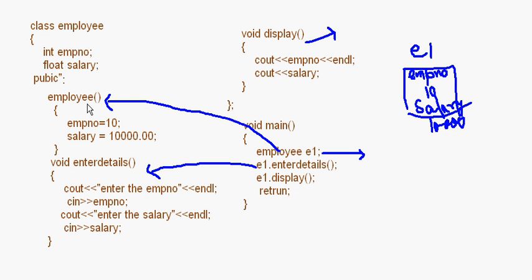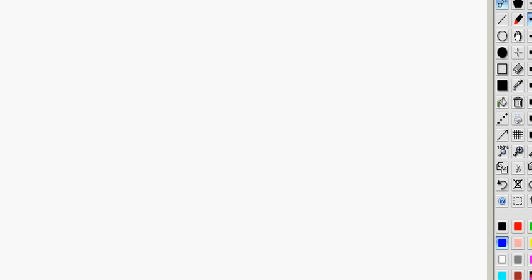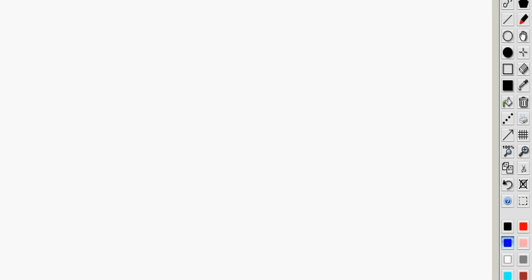This is a small example showing how to write a constructor, how the constructor is called by the compiler, and what actually happens when this program is executed. Basically the job of the constructor is to initialize the data members of a class. We can also write programs without constructors — previously we have been writing programs only without constructors, and the objects were still getting created.